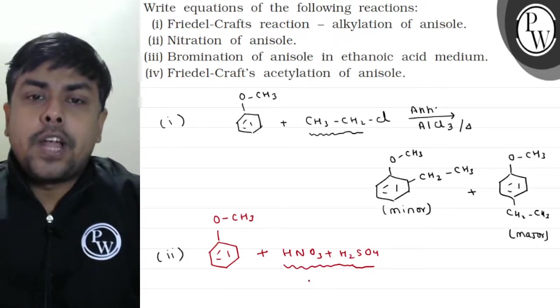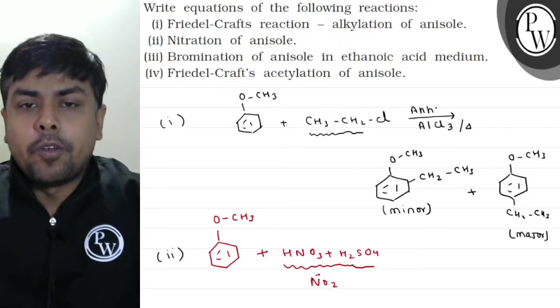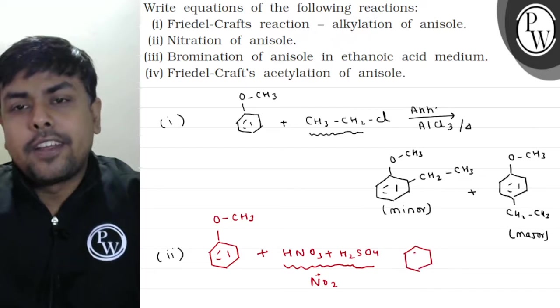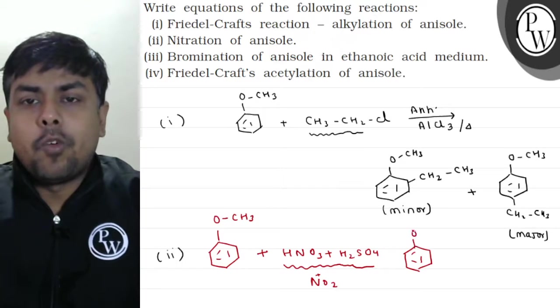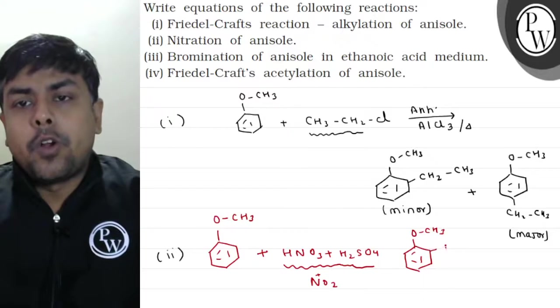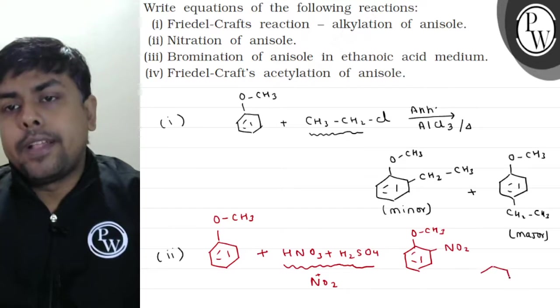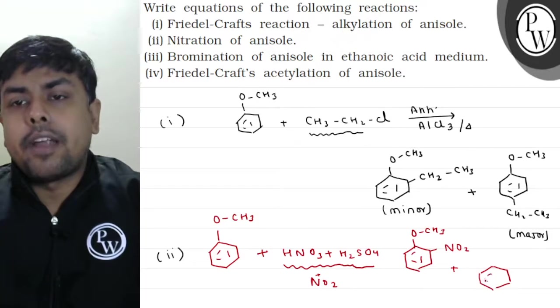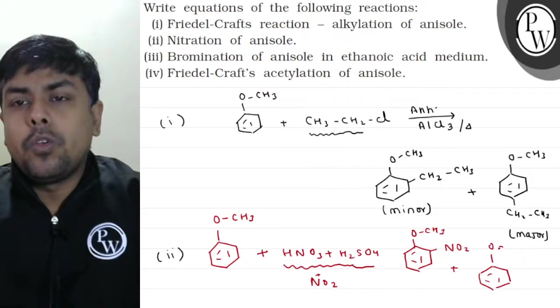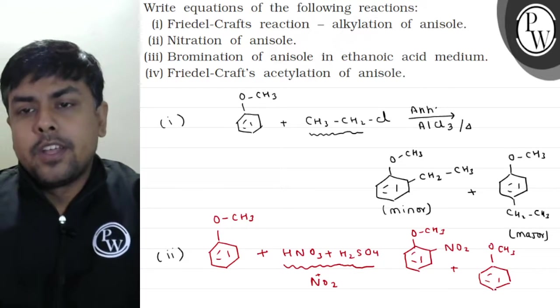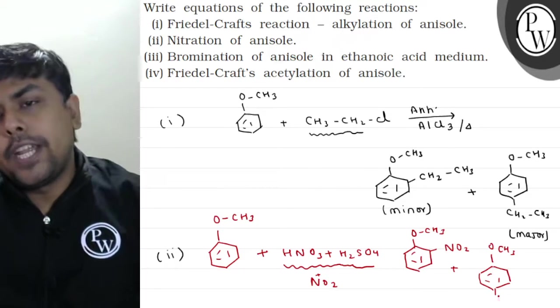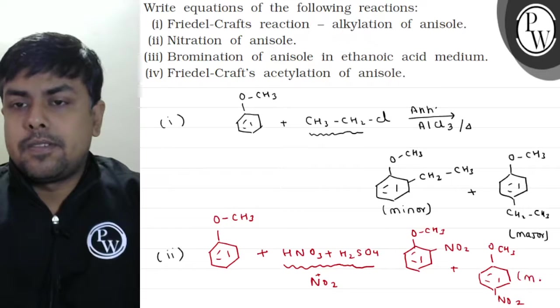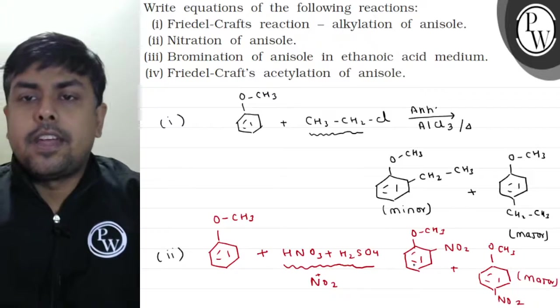The electrophile generated here is N-O-2 positive. What will it do? It will attach at ortho and para positions. So I will have O-C-H-3. Once, attach it at ortho. Once, attach it at para. Plus. Which one is major here again? Para one. Why? Because O-C-H-3 is no doubt plus M but also minus I. So at ortho position, inductive effect dominates a lot. So this is major and this one is minor.